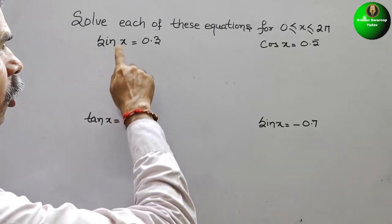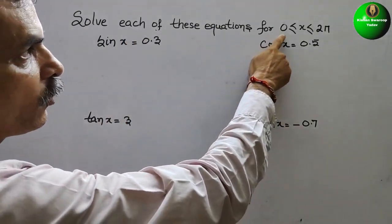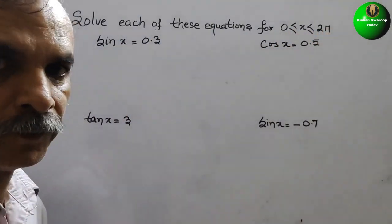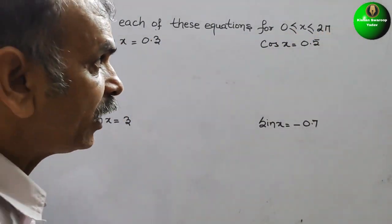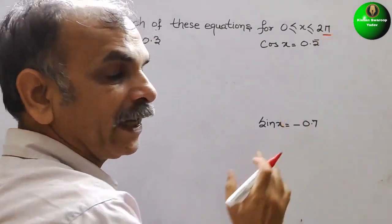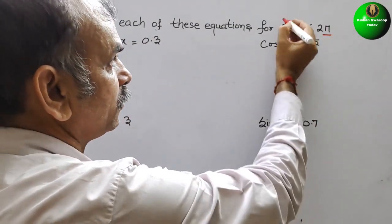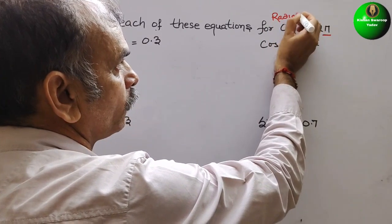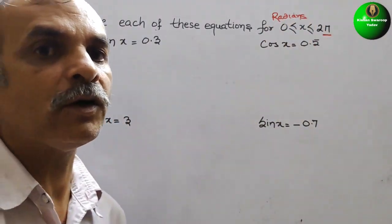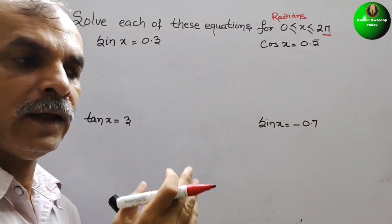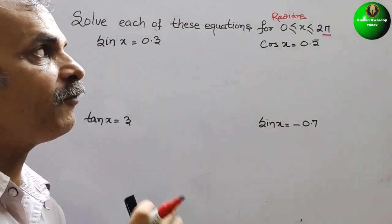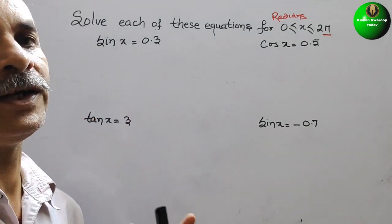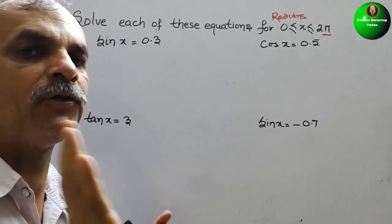Your question is to solve each of these equations for 0 ≤ x ≤ 2π. Since they have given 2π, that means we are working in radians. In the last question, we found the value in degrees; here we will find out the value in radians. The approach is the same.